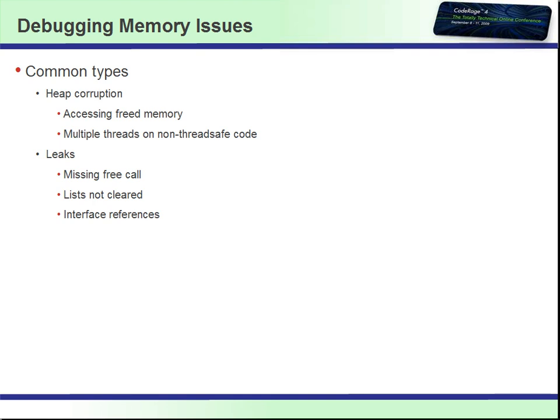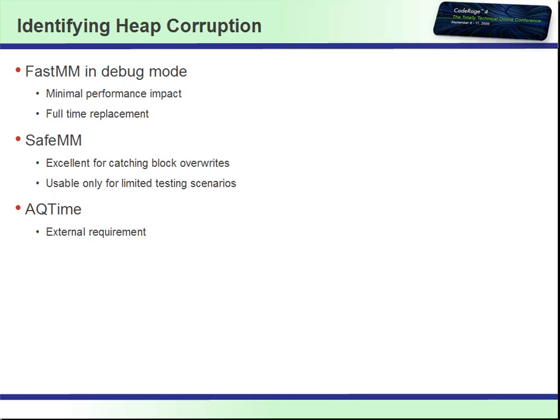In terms of identifying heap corruption, FastMM running in debug mode is one of the most effective ways of finding it. Heap corruption is often non-deterministic — depending on what data got overwritten, you may or may not see a failure, and typically if you do see a failure it will be different every time. FastMM is very helpful for identifying those because in most cases you can just run with it full time. During the field test cycle for RAD Studio 2010, we had field testers running with the debug memory manager for most of the first part of it, and the internal development team runs with it on full time.